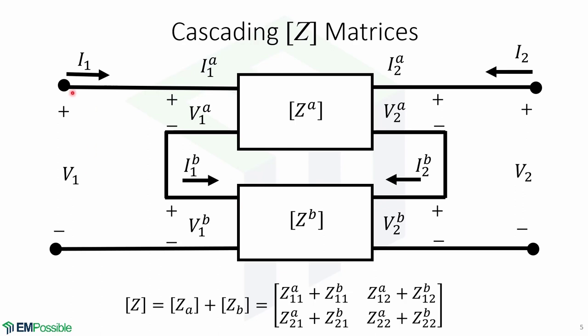Notice that we still have V1, I1, V2, and I2 but also we have voltages and currents for each of the impedance matrices.